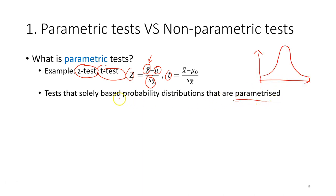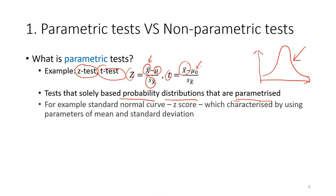Parametric tests depend on a probability distribution — there is a specific curve that we refer to. This probability distribution is characterized by its parameters. For example, the standard normal curve uses the z-score, which is characterized by the parameters of mean and standard deviation. This is what makes a test parametric.